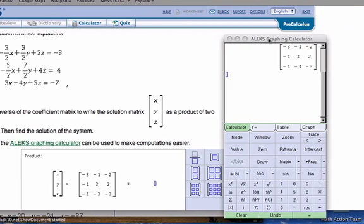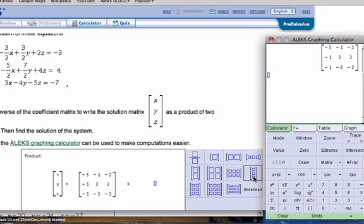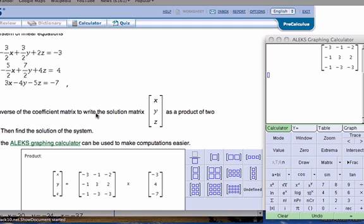So I need to move this a little bit. I need one that has one column and three rows. I need to enter in the constants: negative 3, 4 and negative 7. Just a reminder that came from these values right here.